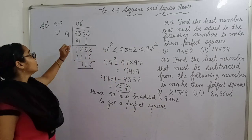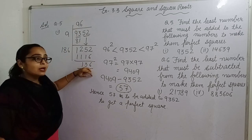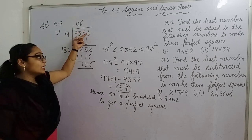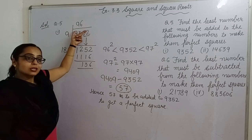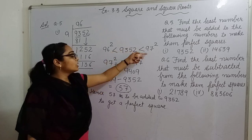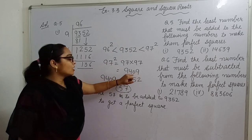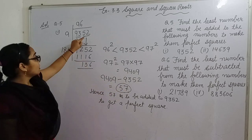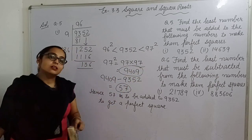Let me explain again: you found the square root as approximately 96, but it's not exact. Since we need to add to this number, the result will be larger — so we take the next number, which is 97. This number lies between 96² and 97². So you calculate 97² = 9409, subtract 9352, and you get 57. If we add 57, we get 9409, which is a perfect square.